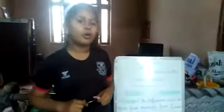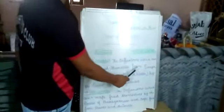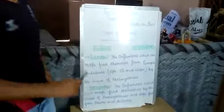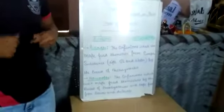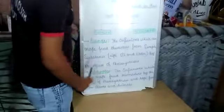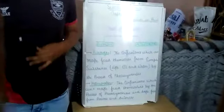What are autotrophs? Organisms which can make food themselves from simple substances like CO2 (carbon dioxide) and water by the process of photosynthesis are called autotrophs. What are heterotrophs? Organisms which cannot make food themselves and take food from other plants and animals are called heterotrophs.